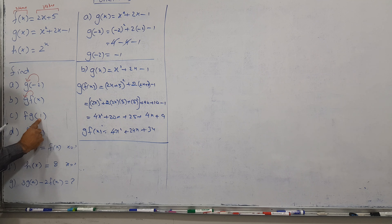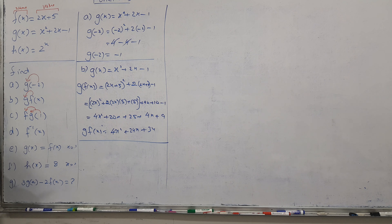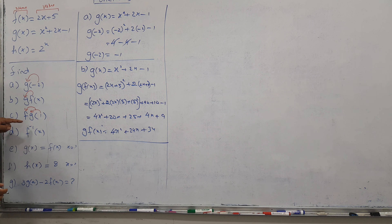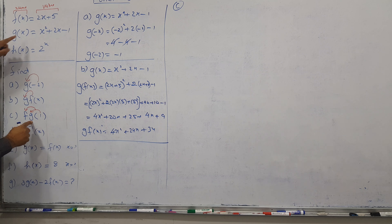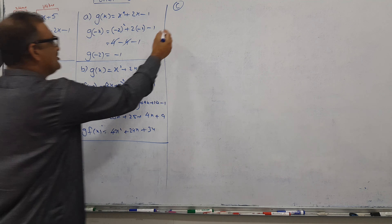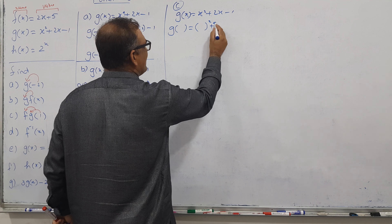Part C: The difference from Part B is that here we have a number (1) instead of X. When you have a number, first put the number into G, then put the result into F — step by step. So first I will put 1 into G. Copy the G function: G of X is X squared plus 2X minus 1. How many X's? Leave that many empty spaces.